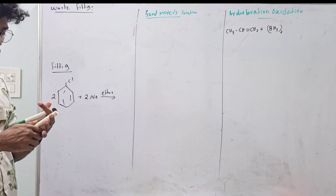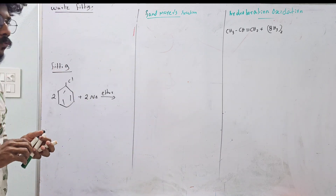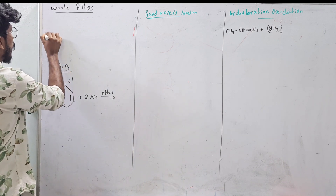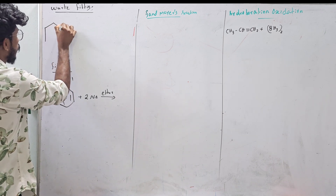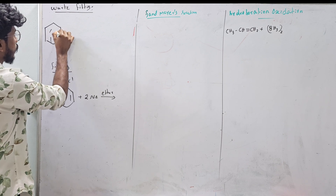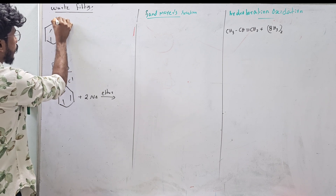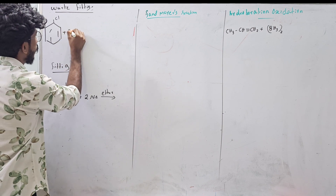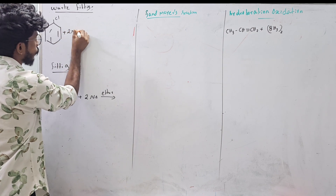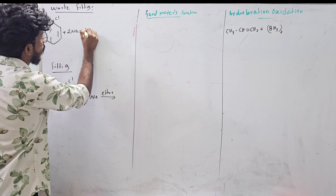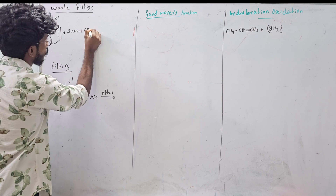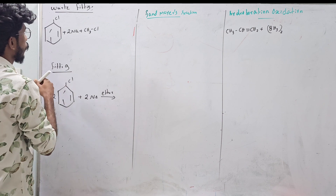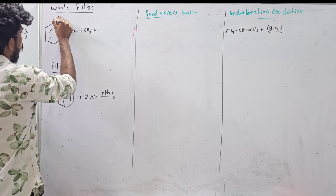First, what is a Wurtz reaction? If you want to use benzene, you use chlorobenzene. If you want to use sodium, you can use sodium. If you want to use sodium alkyl or a halogen, you can use it here.